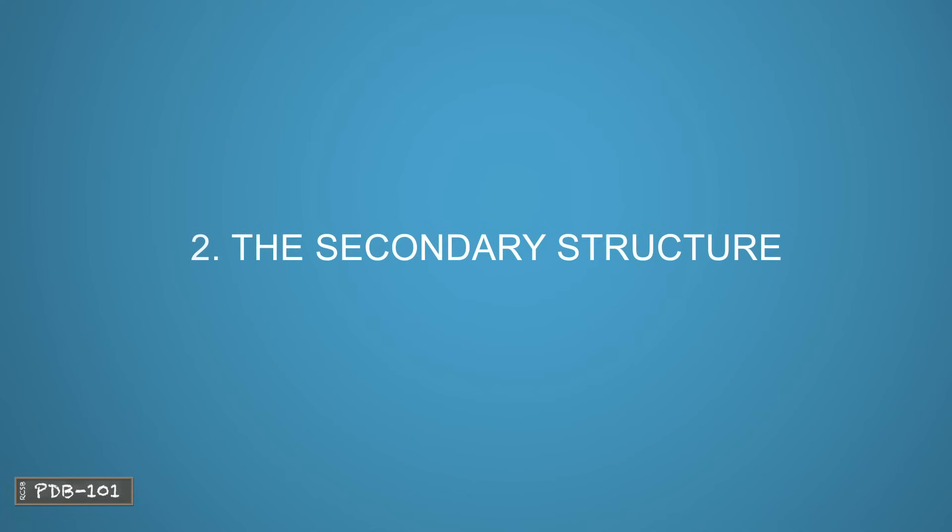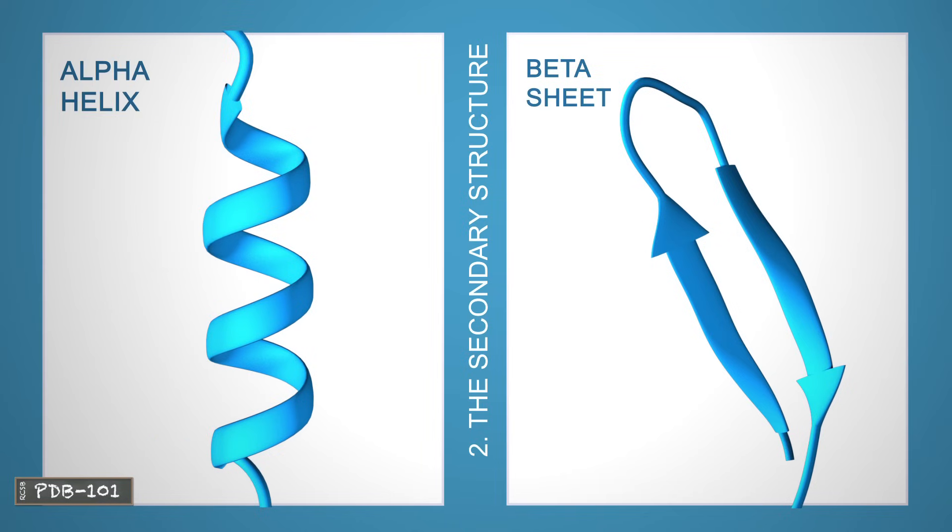Protein chains often fold into two types of secondary structures: alpha helices and beta sheets.